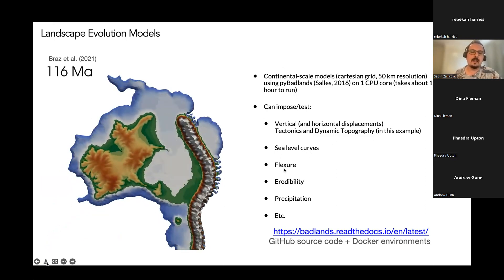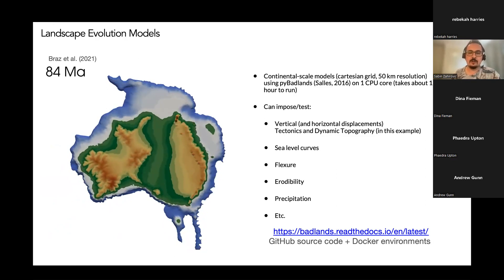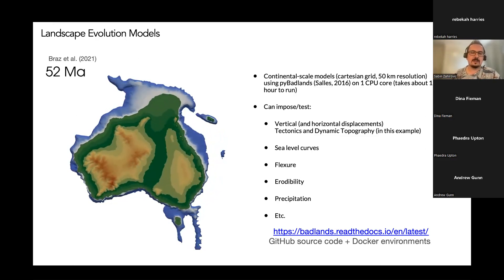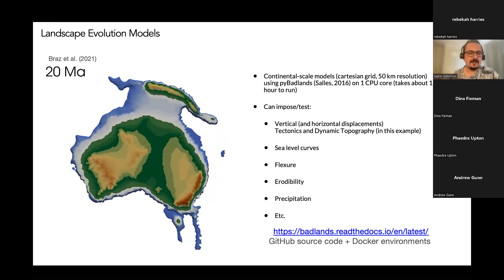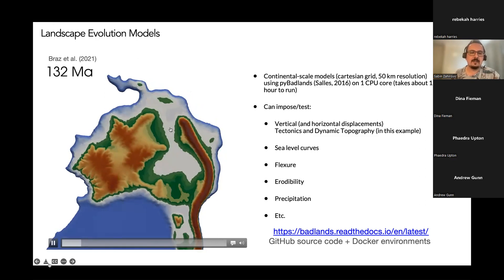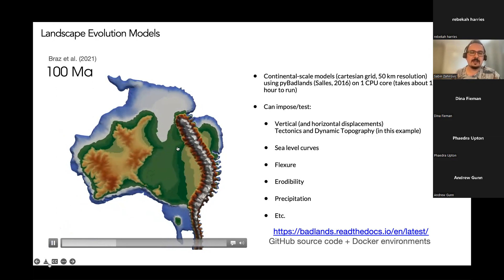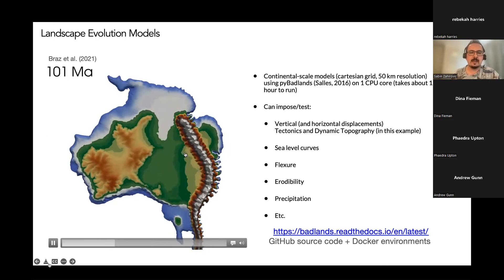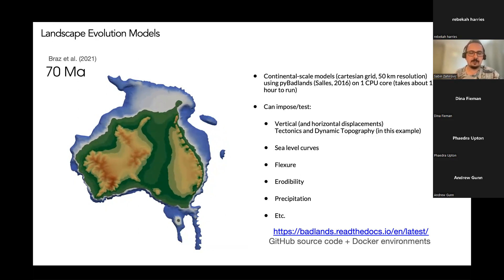We can test different sea level curves, different elastic thicknesses of the plate in terms of how it accommodates sedimentation, the erodibility of the geology, and different precipitation or climate scenarios. This is really incredible because the landscape becomes alive in these deep time models. We can look at paleo coastline evolution, and in particular we were interested in the flooding of eastern Australia — the Eromanga Sea. There was a mid-Cretaceous flooding event, perhaps similar to the Western Interior Seaway in the US, with a cordilleran system along eastern Australia that collapsed from about 100 million years ago.